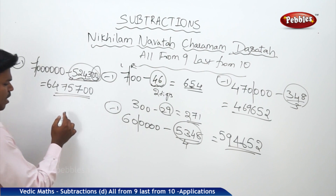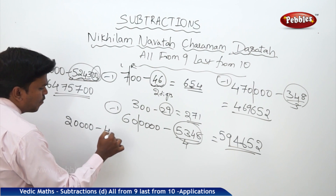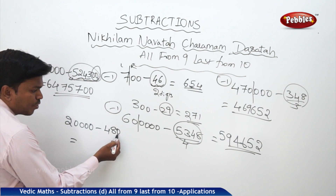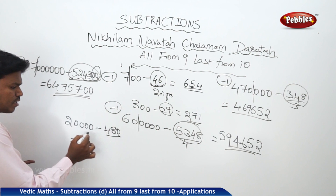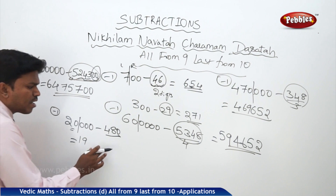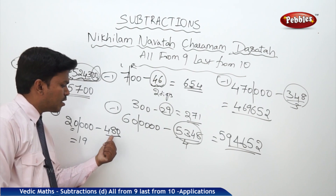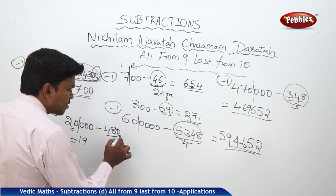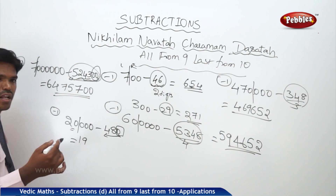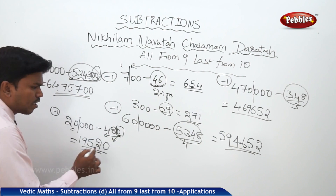Suppose 20,000 minus 480. How many digits? Three digits: 1, 2, 3 — make a partition. The left part 20 becomes 19. To get the remaining answer, apply 'all from nine, last from ten' to 480. Ignore the trailing zero for now and apply to 48: for 4 it is 5, for 8 it is 2. Now drop the zero back. So the answer is 19,520.